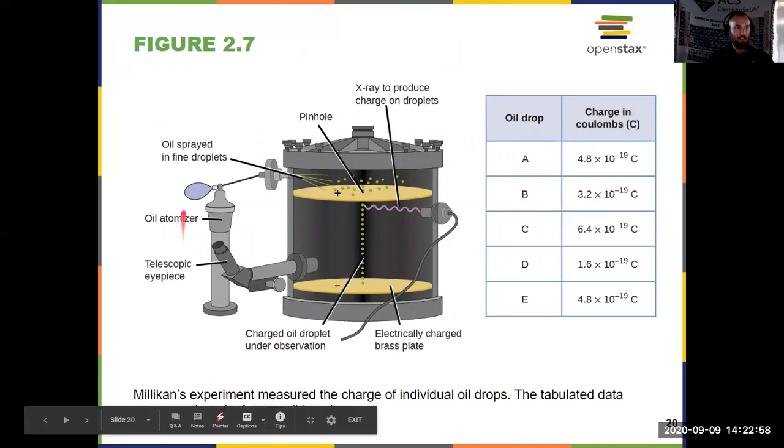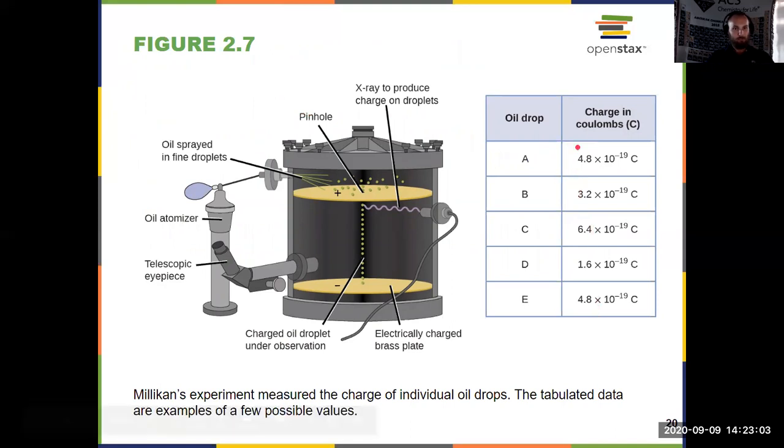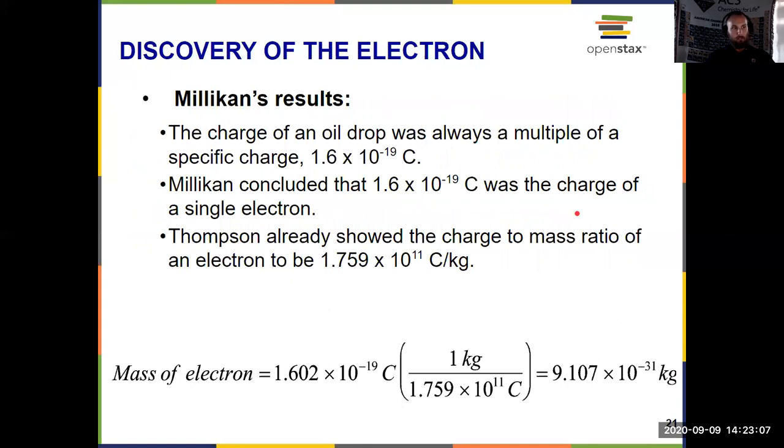And this was important because it allowed him to determine the charge on these drops, which was always a multiple of the same value. Here we see a diagram of the experiment on slide 20, and notice these ratios over here. So he knew that the oil drop was always the multiple of a specific charge, like there's our actual charge there, 1.6 times 10 to the negative 19, that capital C is Coulombs. So he concluded that must be the charge of a single electron.